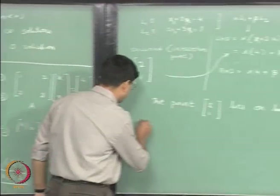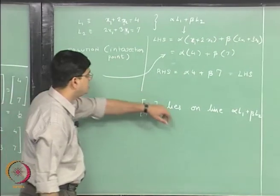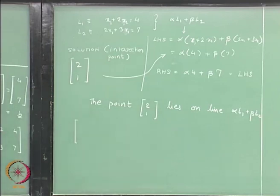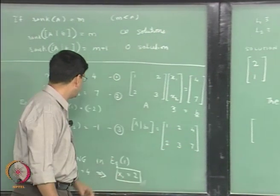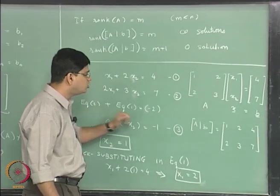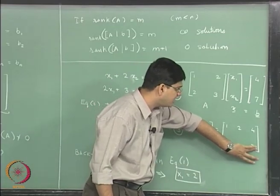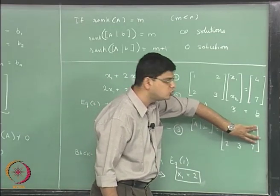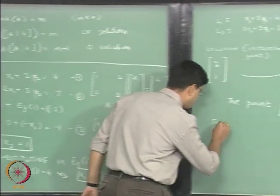So what we did in Gauss elimination is we took the matrix A bar B over here, and then we subtracted from the second equation 2 times the first equation. So from this particular row we subtracted 2 multiplied by this row. So the A bar B matrix we had was 1, 2, 4, 2, 3, 7.